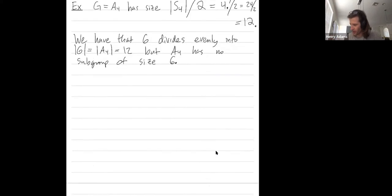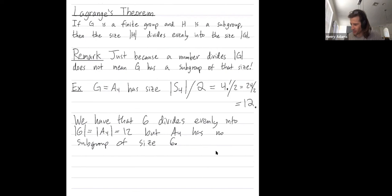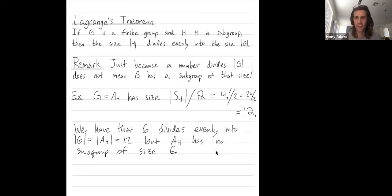So I will end there. A4 is a group that has size 12, and six divides 12, but it has no subgroups of size six.